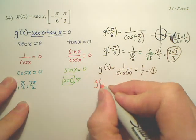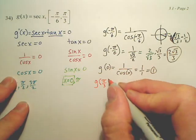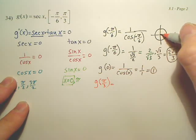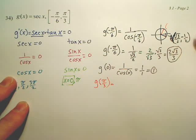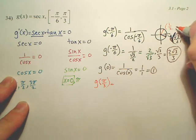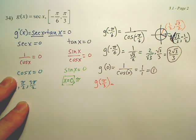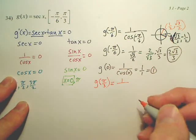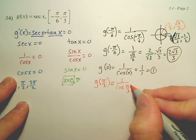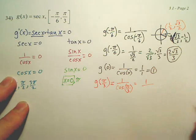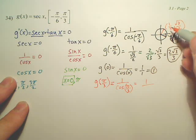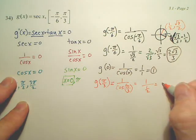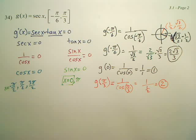And the last one: g of pi over three. Pi over three on the unit circle has coordinates one half comma square root three over two — both positive. So that's one over cosine of pi over three, which is one over one half, which equals two.